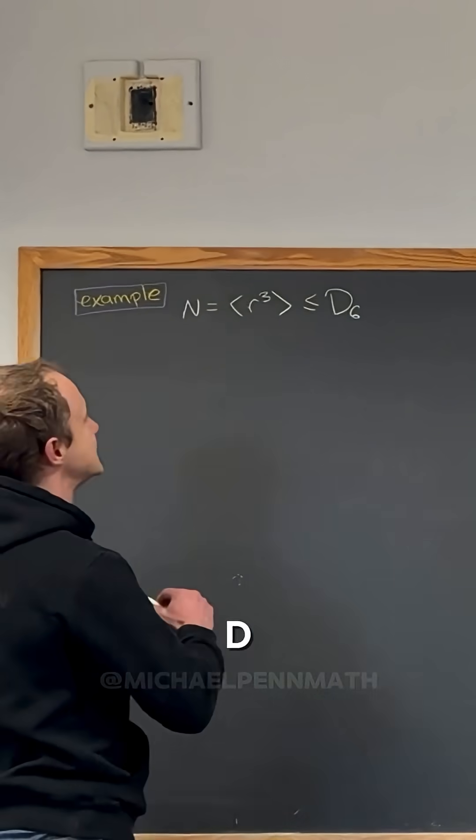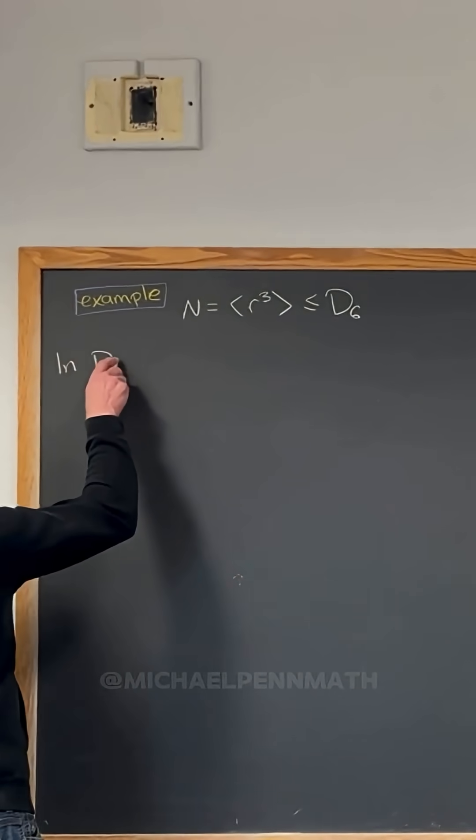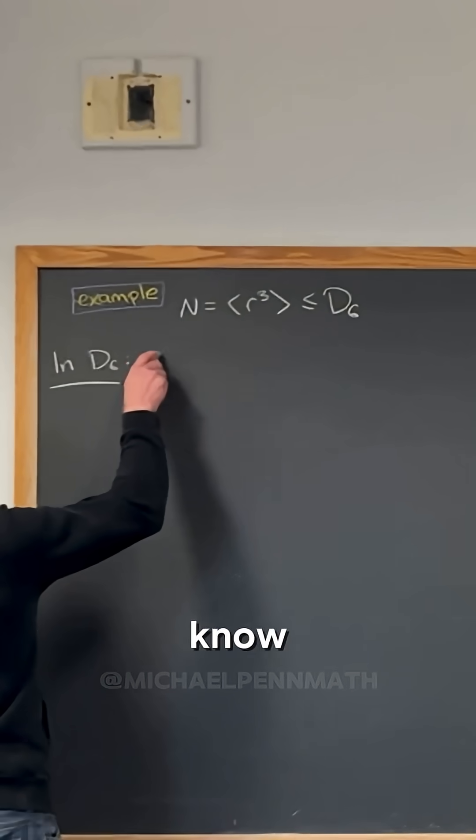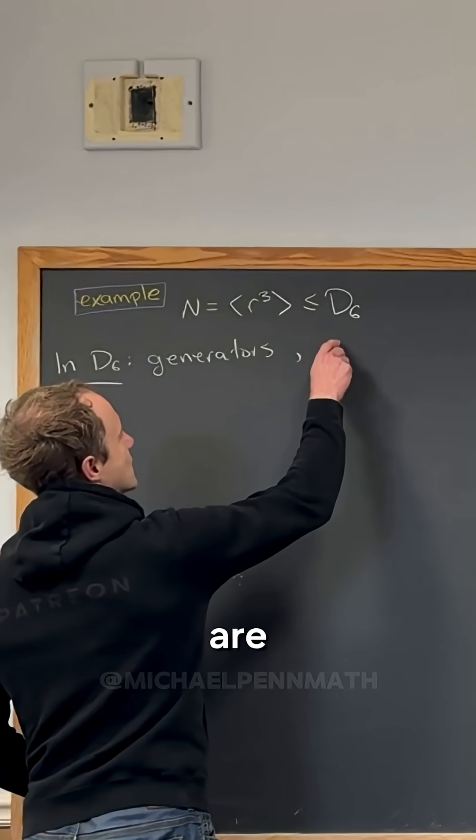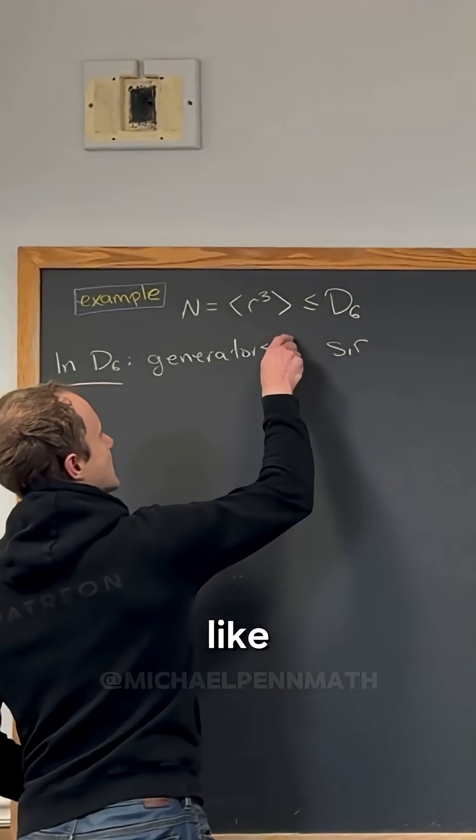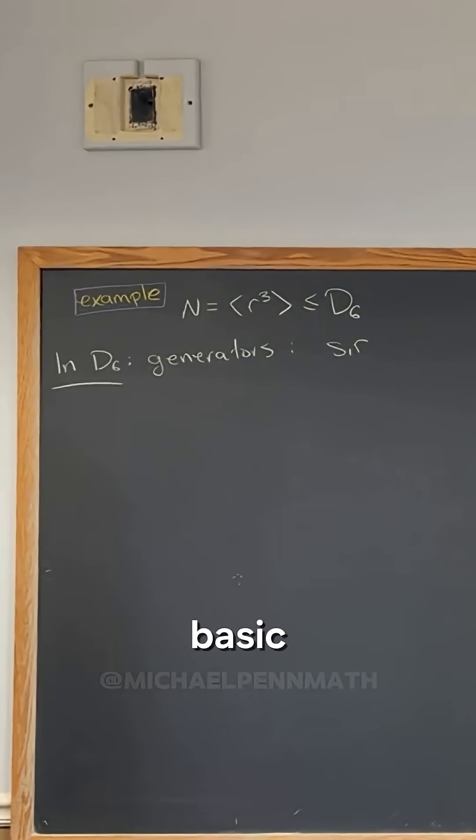So notice that in D6, what do we know? In D6, we know that there are two generators. Those generators are s and r, the basic reflection and then the basic rotation.